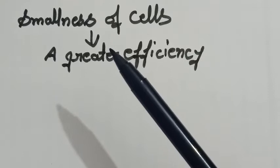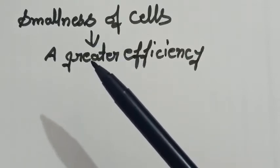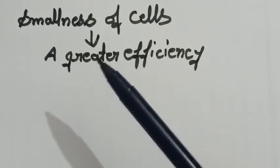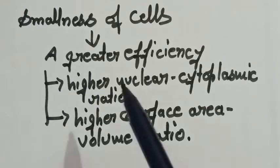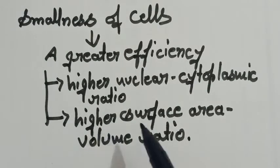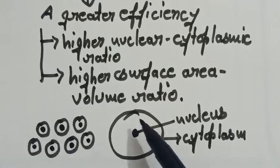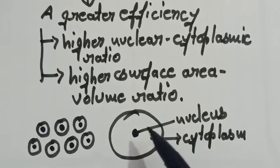The reason behind this is the smaller cells are more efficient and active metabolically because of higher nuclear cytoplasmic ratio as well as higher surface area volume ratio. Here, these are the smaller cells and this one is one of the big cells.